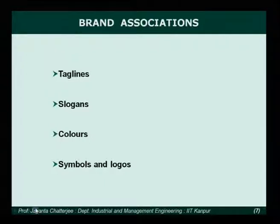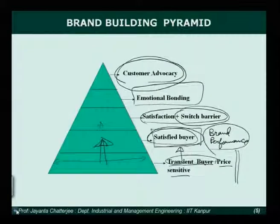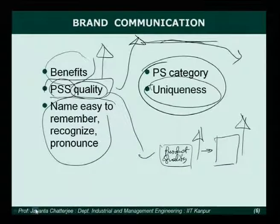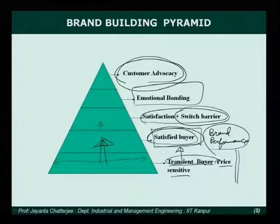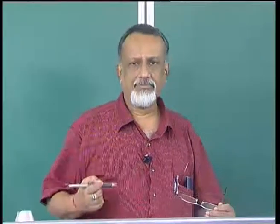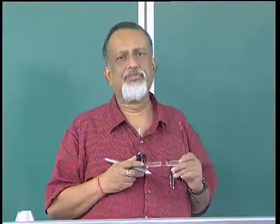Tag lines, slogans, distinctive color schemes, symbols, and logos are all part of brand association, which are important for brand communication strategy and the first three steps in the brand-building pyramid. Another well-known brand-building strategy is to use brand ambassadors — celebrity endorsements or involving top stars and players in creating a new brand or a distinctive position.